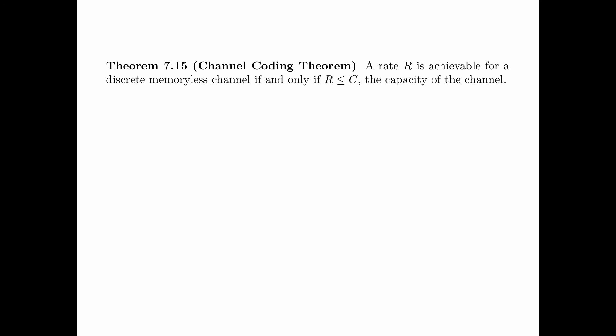Theorem 7.15 is the channel coding theorem, which says that a rate R is achievable for a discrete memoryless channel if and only if R is less than or equal to C, the capacity of the channel. This is the main theorem of this chapter.